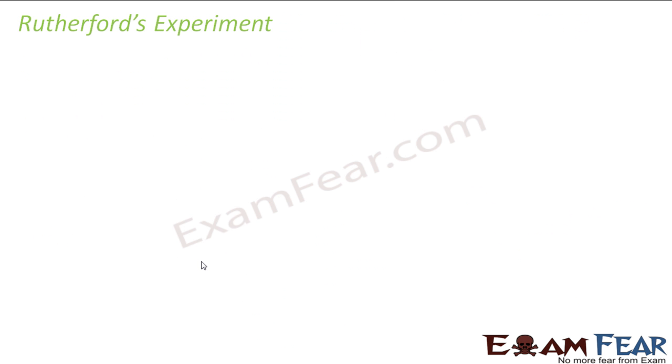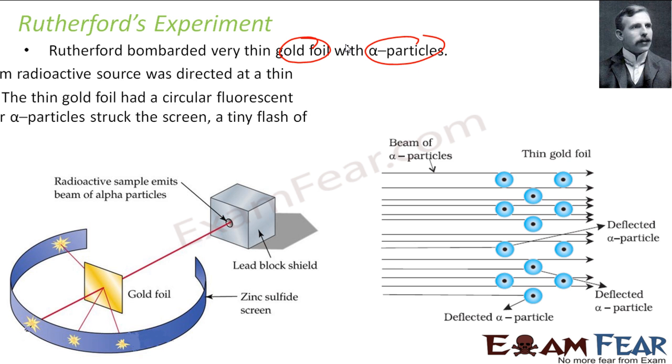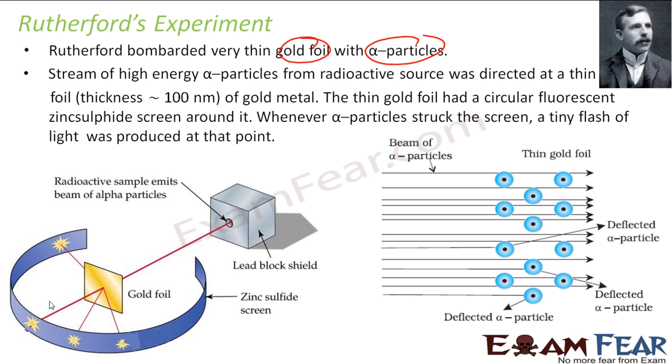There is a guy called Rutherford who did an experiment to prove that Thomson's model was incorrect. It is a very famous experiment. He used a very thin gold foil and bombarded it with alpha particles.